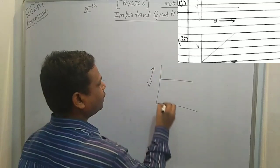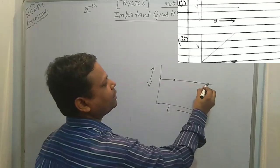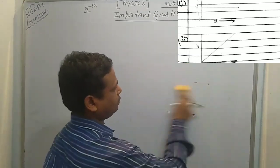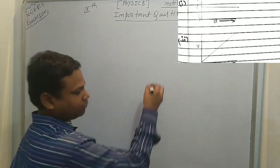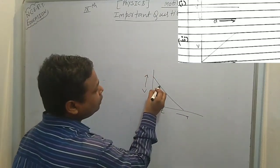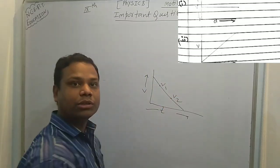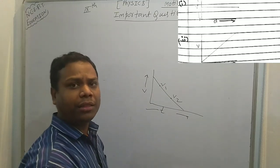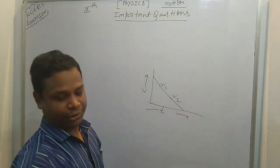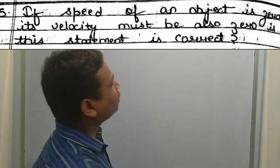The second graph is a straight horizontal line showing uniform velocity — at every point velocity remains the same. The third graph shows uniform retardation, where at every point the object's speed continuously decreases. Retardation commonly occurs when brakes are applied in a vehicle.